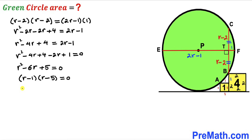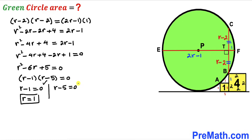Factoring: (r minus 1)(r minus 5) equals 0. Separating the two factors: r minus 1 equals 0 gives r equals 1, and r minus 5 equals 0 gives r equals 5.